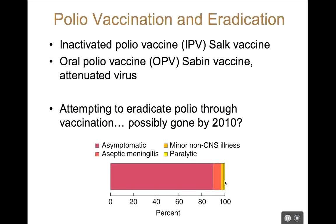We do have vaccines against polio. There are two different vaccines: one is an inactivated vaccine produced by Salk, and the other is an attenuated oral vaccine made by Sabin. The two rivals always talked about each other's vaccines, but both are very effective. There were some problems from time to time with the Sabin vaccine because it did back-mutate once, but both are very effective vaccines.